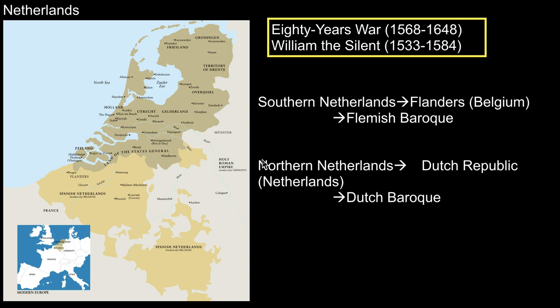The folks in the Low Countries decide to fight back, and their leader is William the Silent from a noble family. He leads a revolt against the Spanish that is partly successful. The Northern Netherlands are able to get their independence from Spain and establish a Calvinist nation with religious freedom called the Dutch Republic — the Netherlands today. Their art is Dutch Baroque. The Southern Netherlands can't get their freedom, remain Catholic under Spanish control, ruled by an archduke. The Southern Netherlands, also called Flanders, becomes Belgium. Their art is Flemish Baroque.